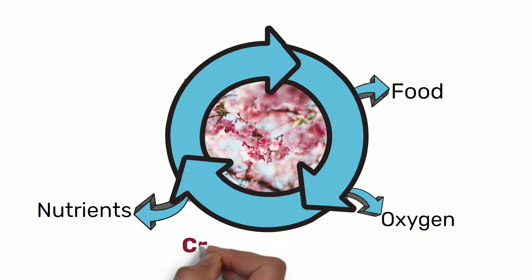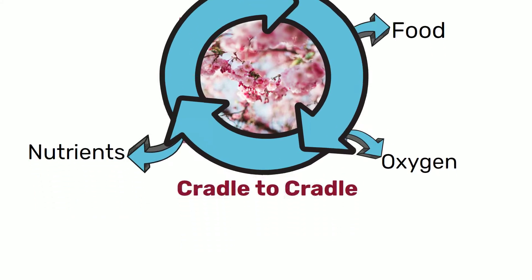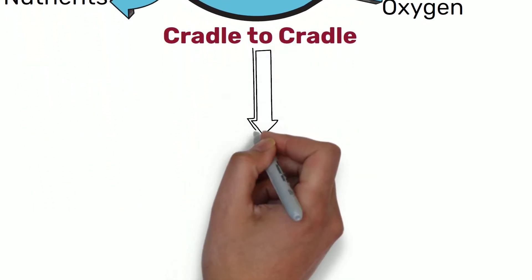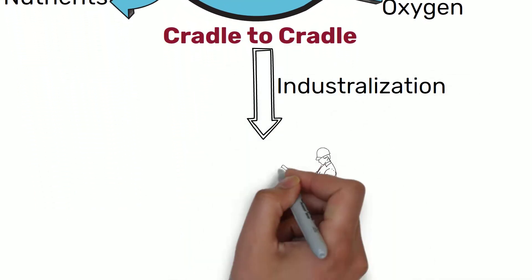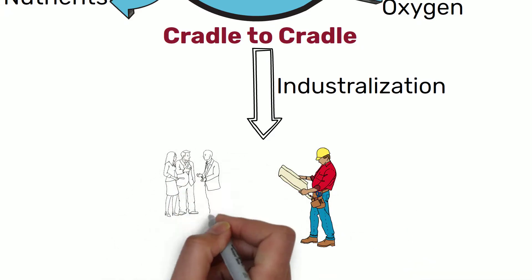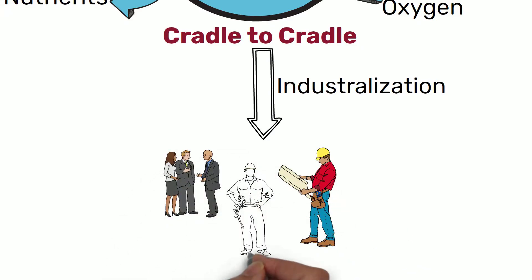This is an example of cradle to cradle, the system that has nourished a planet for millions of years. But as industrialization happened, humans took, altered and synthesized the earth's crust in a way that cannot be safely returned to soil.